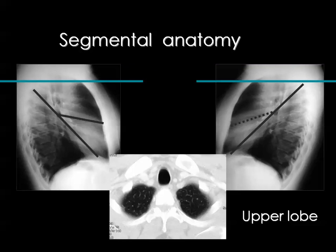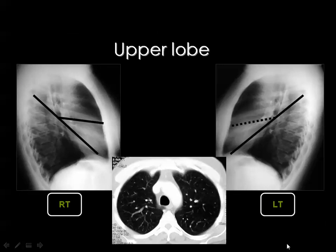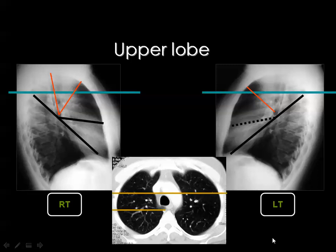For segmental anatomy: the right upper lobe has three segments — anterior, apical, and posterior. On the left side, the apical and posterior segments fuse to form the apical-posterior segment, so the left upper lobe has only two segments. On CT, two lines can be drawn: one demarcating the anterior segment region, with the posterior segment behind and the apical segment in between. On the left side, apical and posterior unite — you have an anterior segment and an apical-posterior segment.